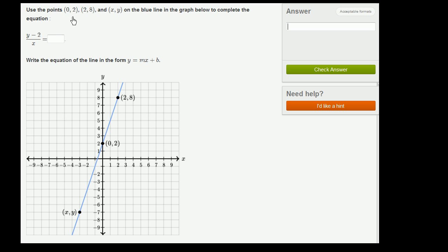Use the points (0, 2), (2, 8), and (x, y) on the blue line in the graph below to complete the equation. They have this first equation: y minus 2 over x equals blank. Then they say, write the equation of the line in the form y equals mx plus b.